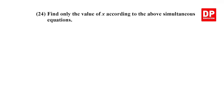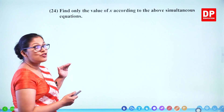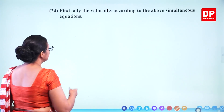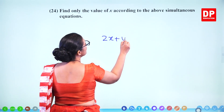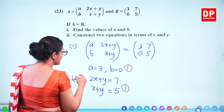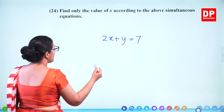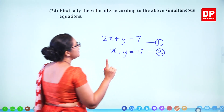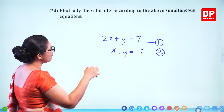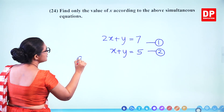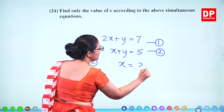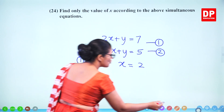Question number 24. Find only the value of x from the simultaneous equations derived in question 23: 2x plus y equals 7 and x plus y equals 5. To eliminate y, subtract equation 2 from equation 1: 2x minus x equals 7 minus 5, giving x equals 2 directly. Two marks.